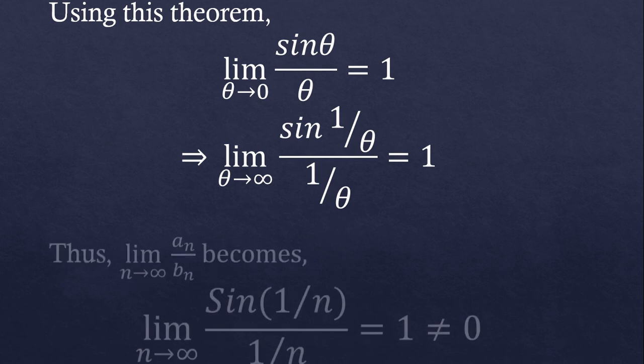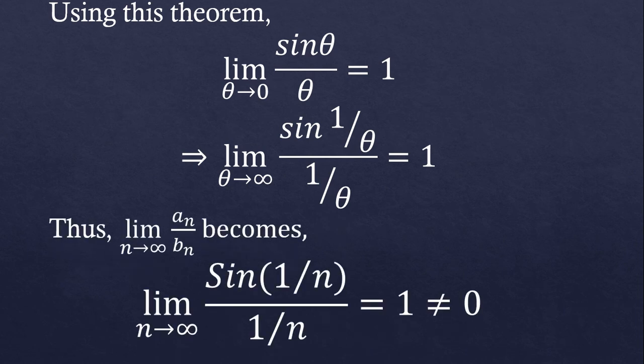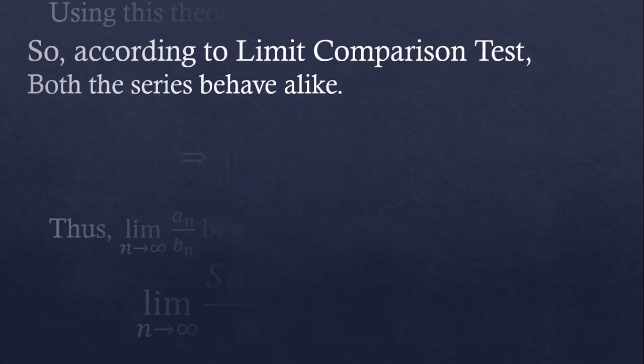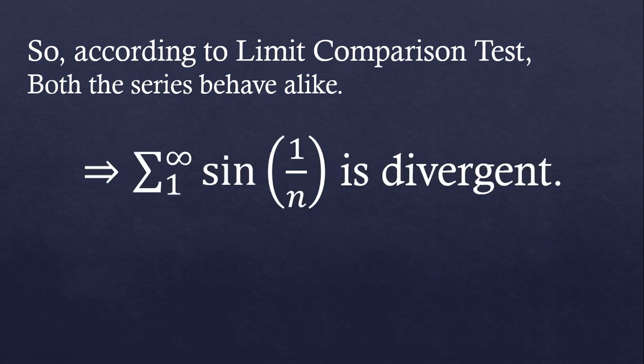Thus, a_n divided by b_n as n approaches to infinity gives us 1, which is not equal to zero. So according to the Limit Comparison Test, both series behave exactly the same way, which means the series sine of 1 by n diverges.